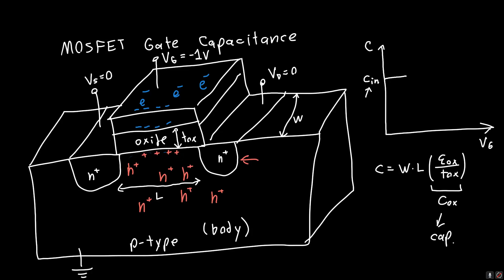So the capacitance is just the width times the length — the area of the parallel plate capacitor — times the permittivity of oxide, divided by the oxide thickness. We call this C-ox, and it appears in textbooks as C-ox. It is implicitly a capacitance per unit area. So the capacitance between the gate and the body per unit area, C-initial, is simply equal to C-ox, and notice that this value is constant.